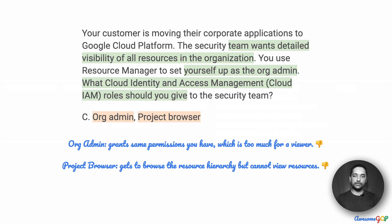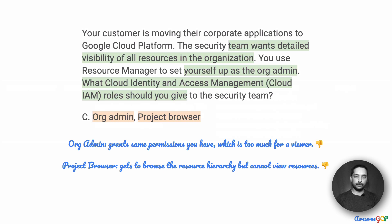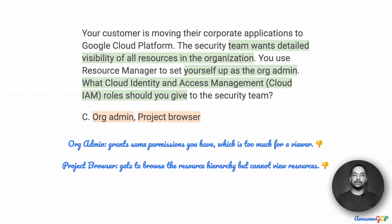So both these roles in option C are not suitable. Org admin gives too many permissions — it's too permissive, allowing the person to grant further permissions, whereas we want to give only viewer permission. And project browser doesn't give enough: you can view the hierarchy, but the resources within the project itself are not visible. So option C is eliminated.